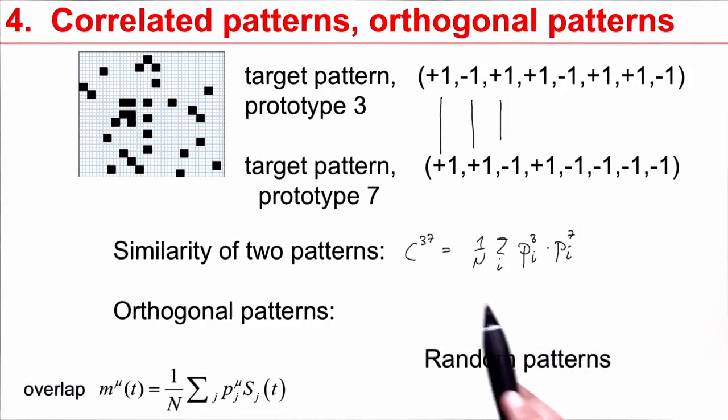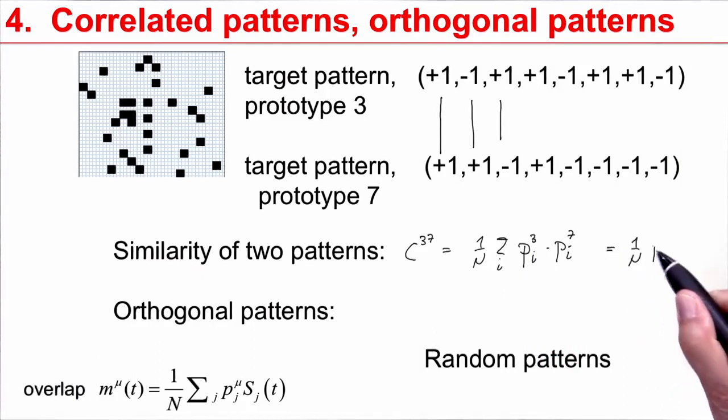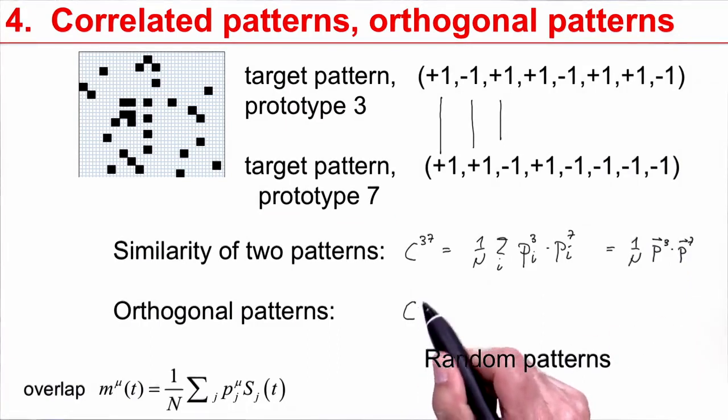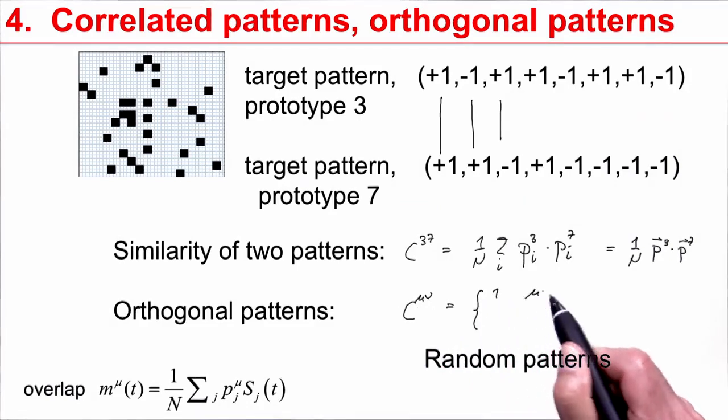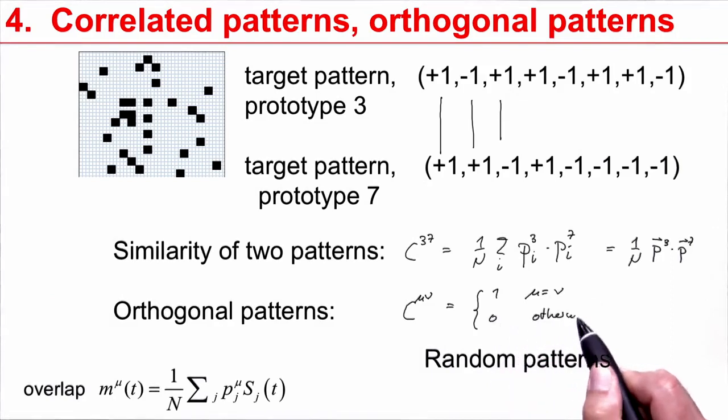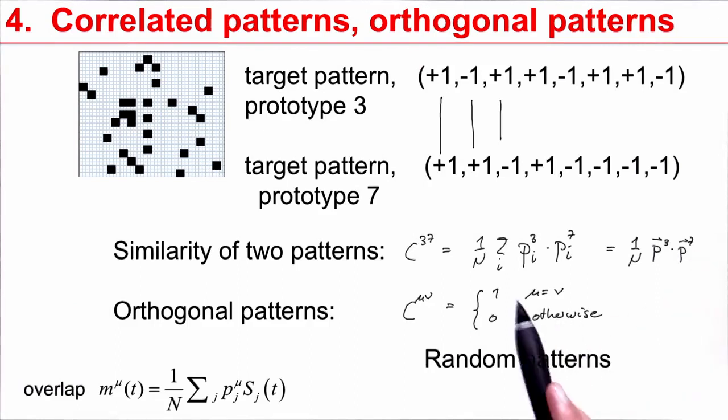Something interesting happens. This is the pixel number i or location i or vector index i for pattern number 3. I can also write this as a scalar product: the whole pattern 3, the whole pattern 7, and one of them should be transposed. It's just a scalar product between two vectors. There are special cases where the scalar product is orthogonal. That means that the correlation between pattern mu and pattern nu is 1 only if mu equals nu and is 0 otherwise. Orthogonal patterns have the name orthogonal because of this scalar product between two vectors. It just means if you sum up all this you get zero.